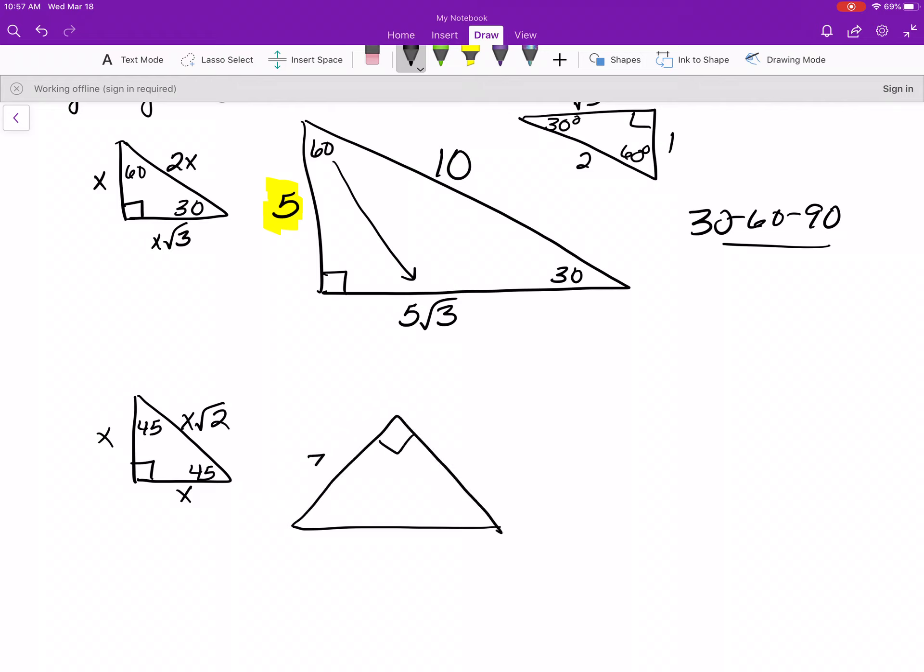And again, that works no matter how you draw your 45-45-90 right triangle. Let's say that this was 7. This would be 7 also, because this is a 45-45-90. And that means this would be 7 square root of 2. That's called a 45-45-90 right triangle. And again, you need to memorize those.